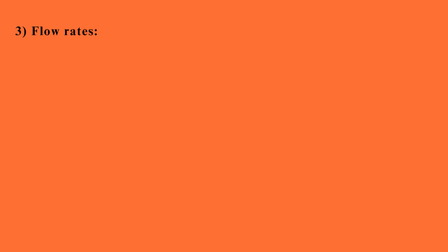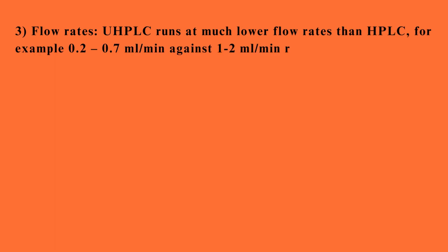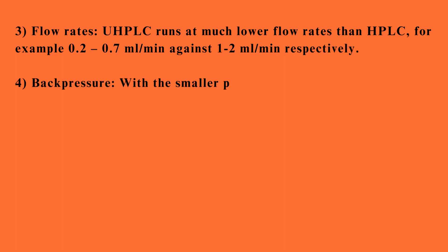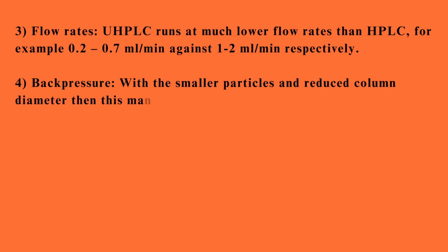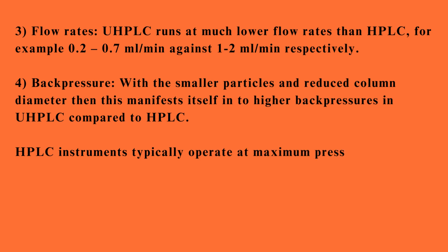Flow rates. UHPLC runs at much lower flow rates than HPLC, for example 0.2 to 0.7 ml/min against 1 to 2 ml/min respectively. Back pressure. With the smaller particles and reduced column diameter, this manifests itself into higher back pressures in UHPLC compared to HPLC.